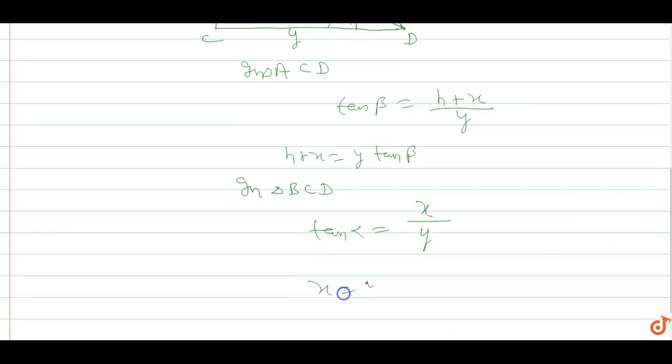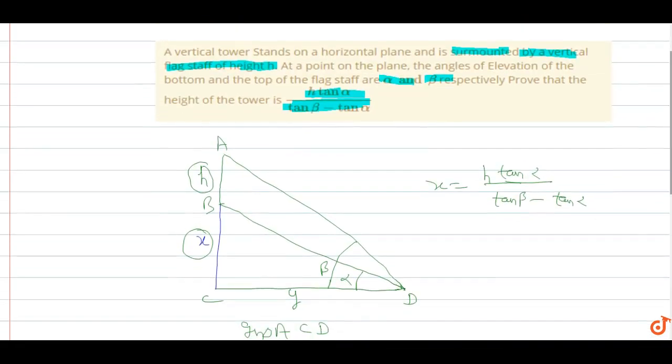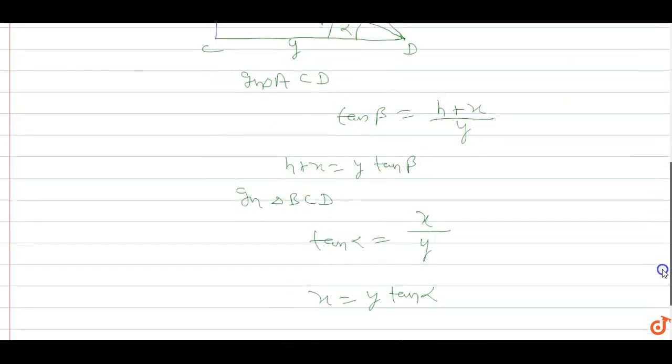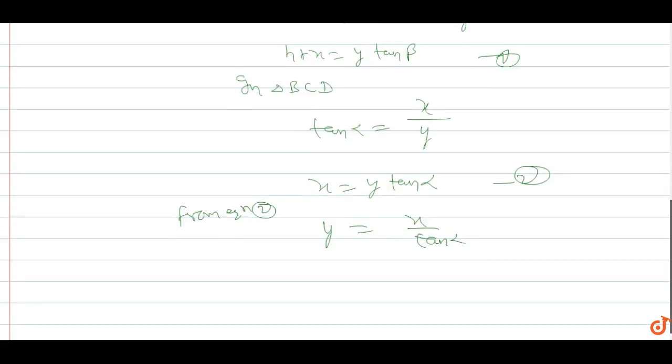The height of the tower x is what we need to find. From equation 2, we can find y's value. From equation 2, y equals x upon tan alpha. We'll substitute this y value into equation 1.